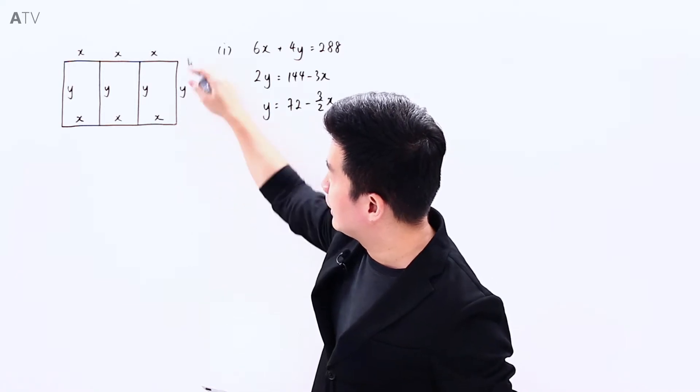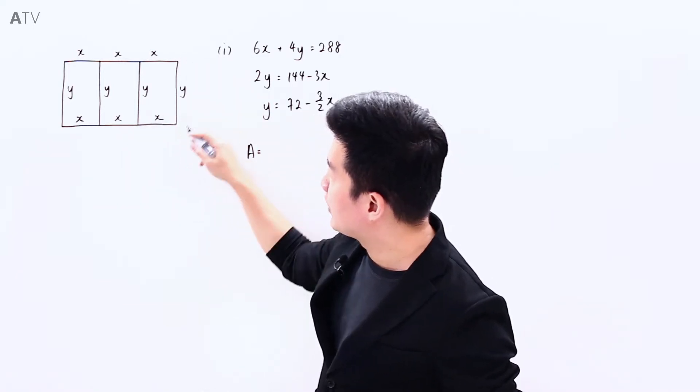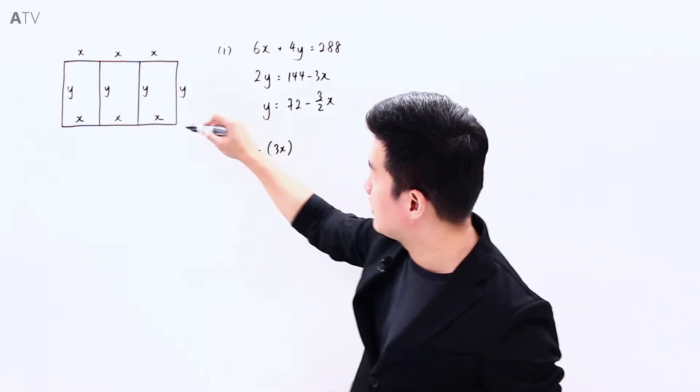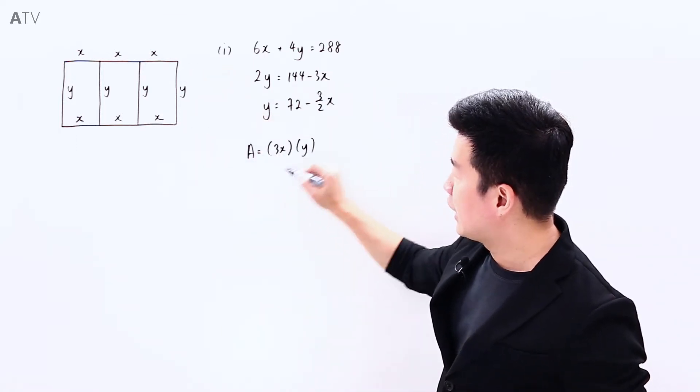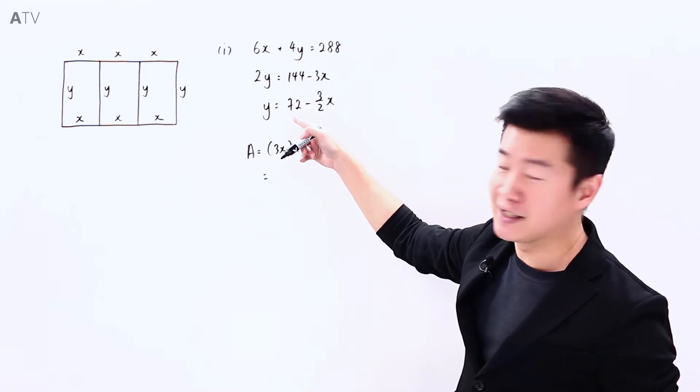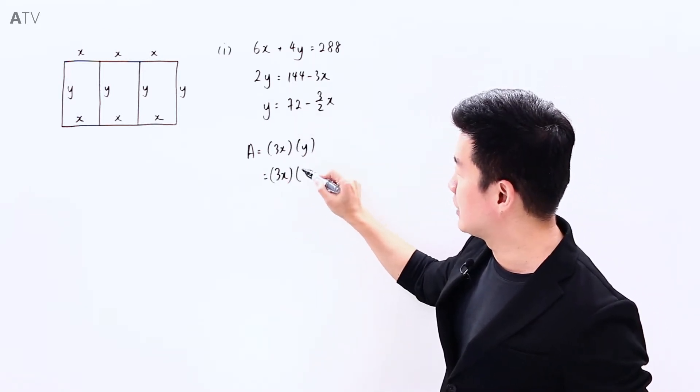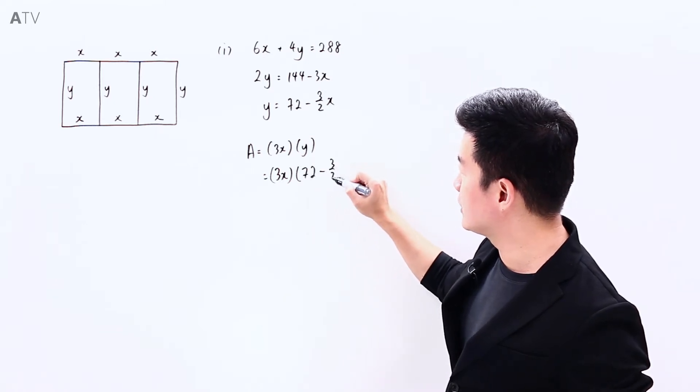As for the area A, it is going to be breadth multiplied by width, so breadth times width. It is going to be 3x multiplied by y. And from the previous part, y in terms of x is this expression over here, so 3x multiplied by 72 minus 3 over 2x.